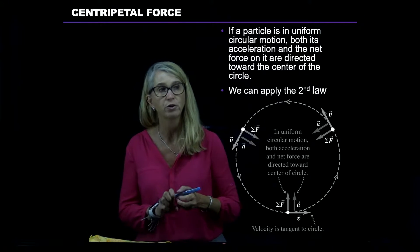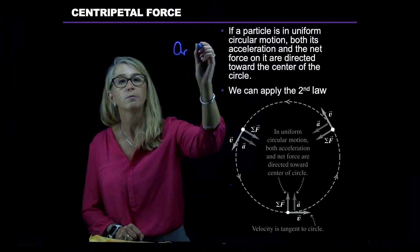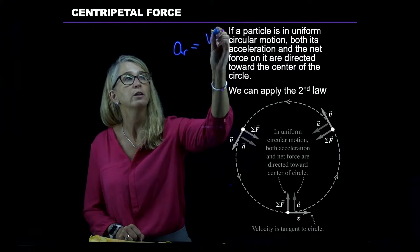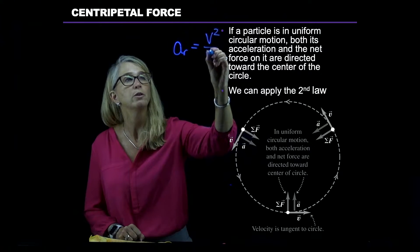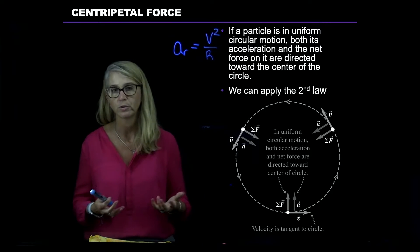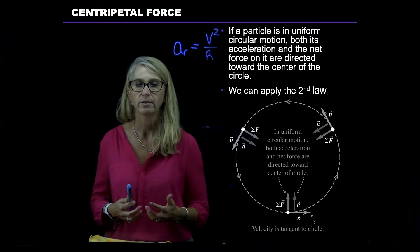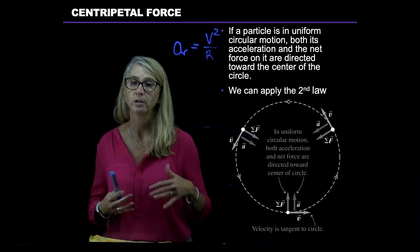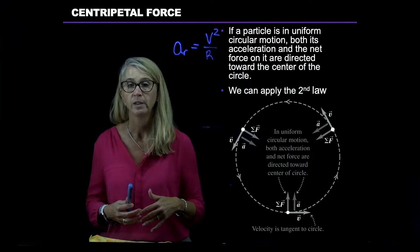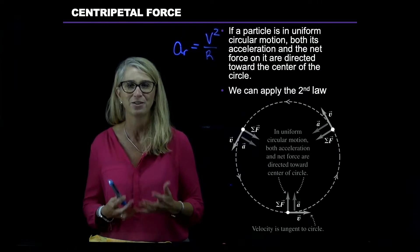The expression for centripetal acceleration, which is sometimes also referred to as radial acceleration, is v squared over r, where r is the radius of the path and v is how fast it's going. The reason that the object has this centripetal acceleration is because of the change in direction, because as it goes in a circle, it can't go straight, so it has to change direction.